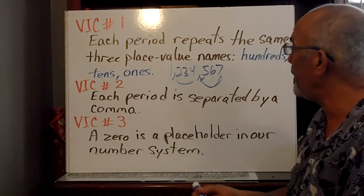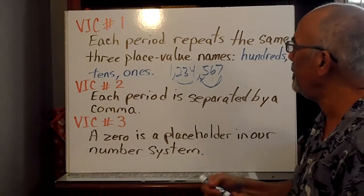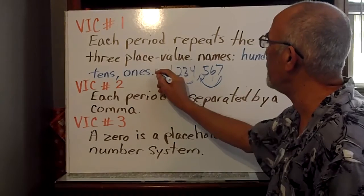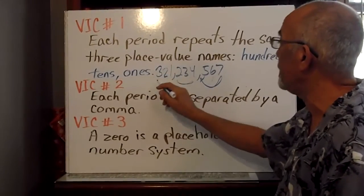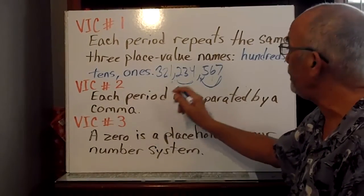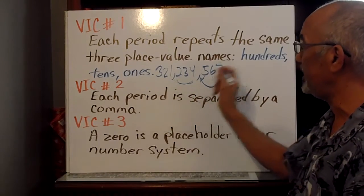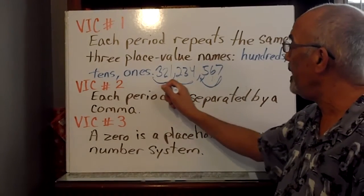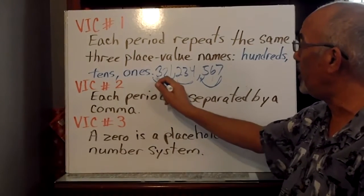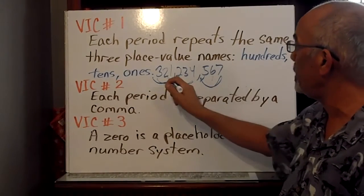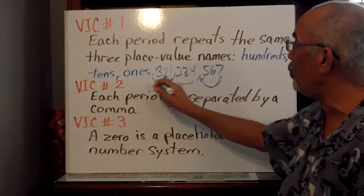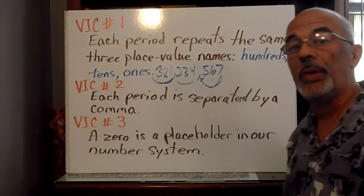So every period has the same three numbers. If we were to make this three hundred and twenty-one million, two hundred thirty-four thousand, five hundred sixty-seven. In the millions period, we would have three hundred, twenty in the tens, and one in the ones. Three hundred and twenty-one million.